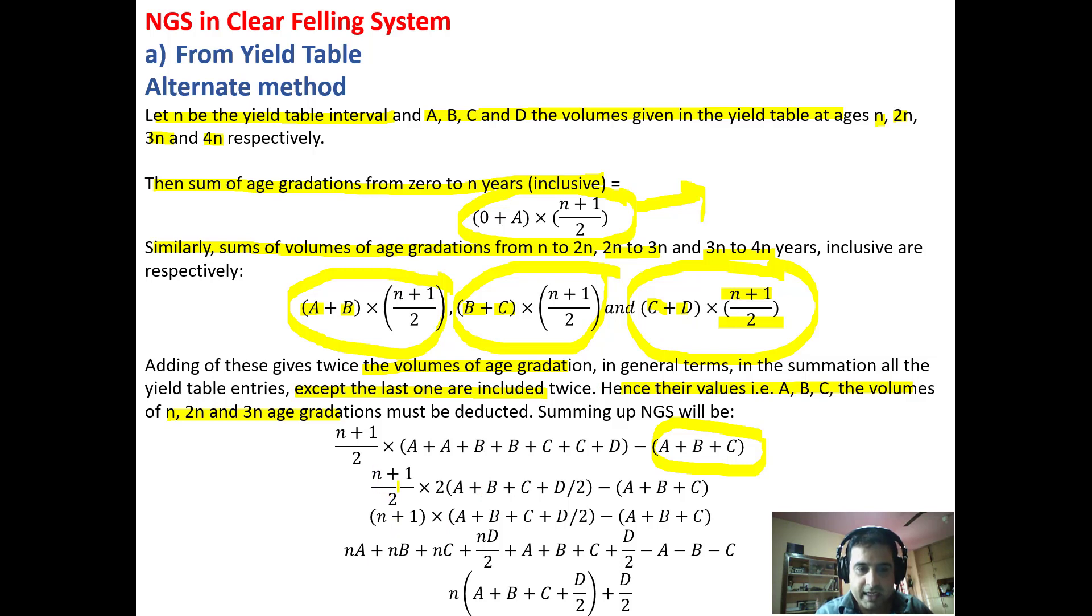Rearranging the terms, we get (N + 1)/2 × [2(A + B + C + D)/2 - (A + B + C)]. Then rearranging, the 2s cancel. We are left with (N + 1) × [(A + B + C + D)/2 - (A + B + C)]. Cross multiplying, we get N(A + B + C + D)/2 + (A + B + C + D)/2 - (A + B + C). Ultimately, we are left with N(A + B + C + D)/2 + D/2.